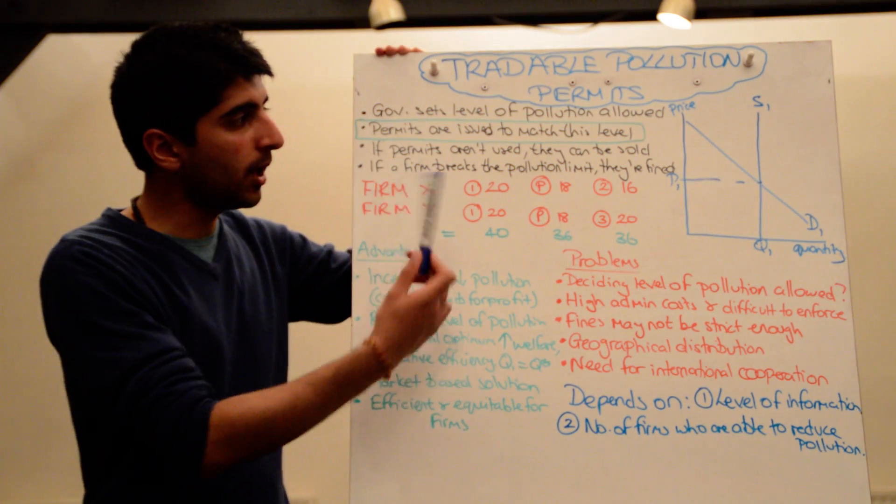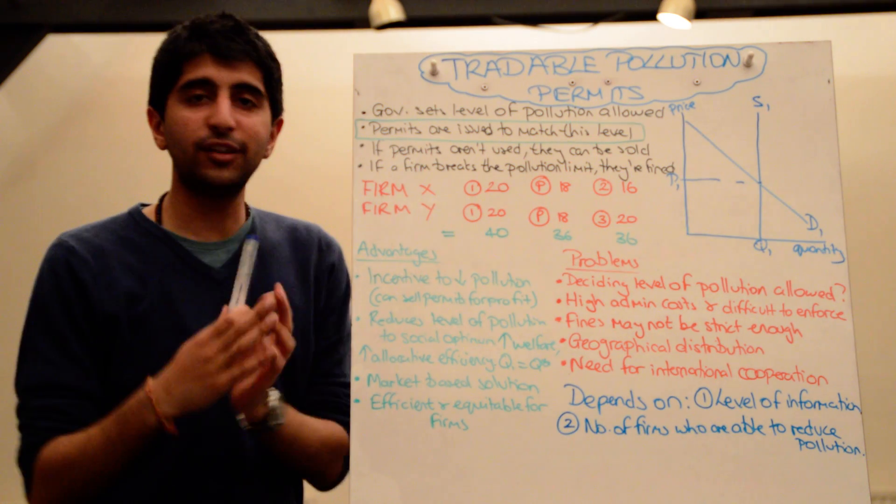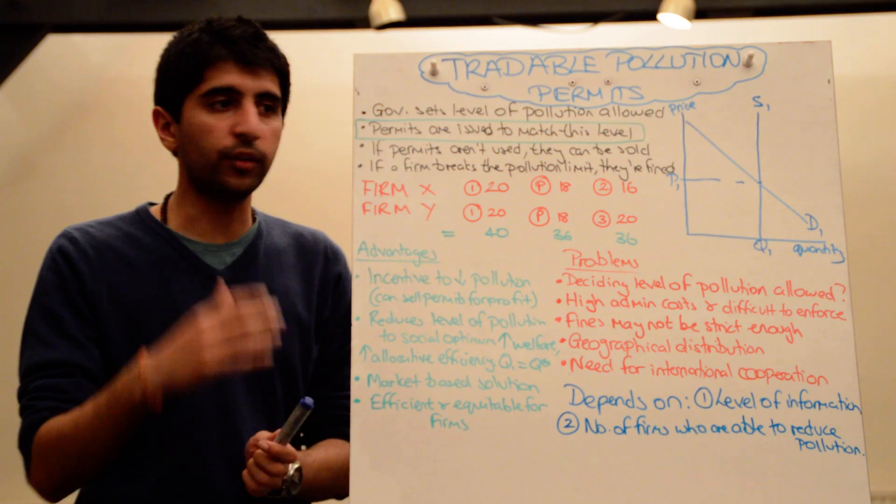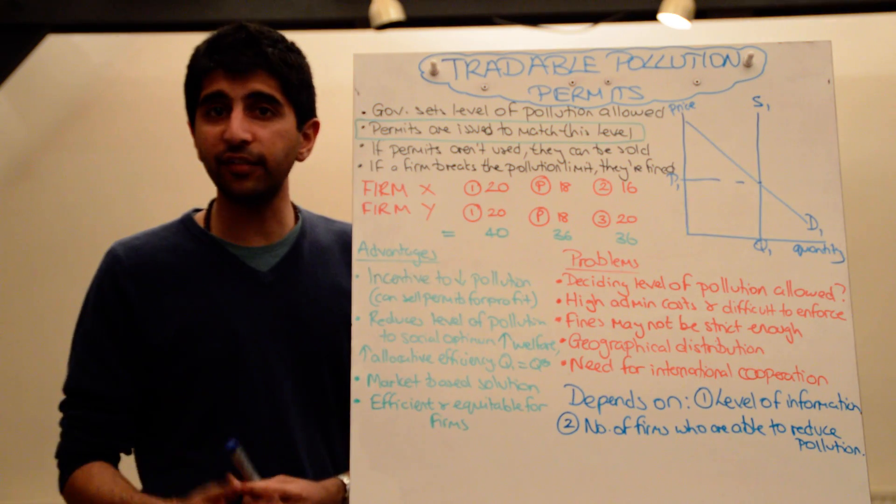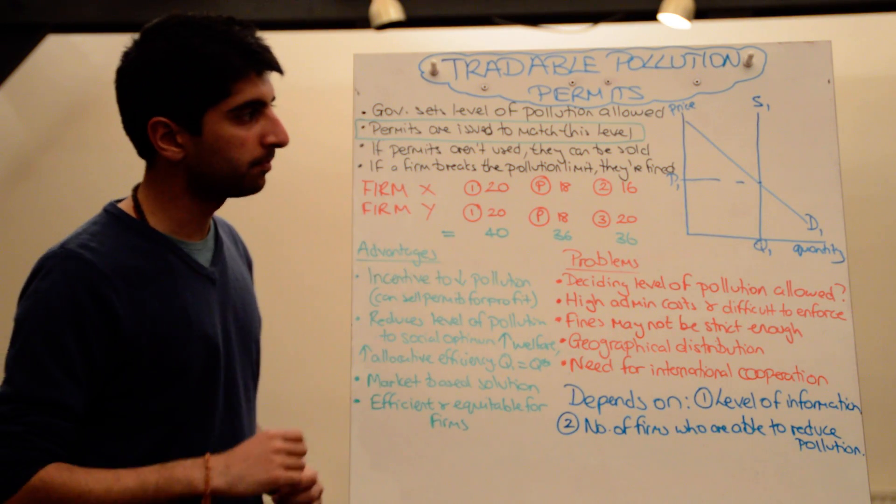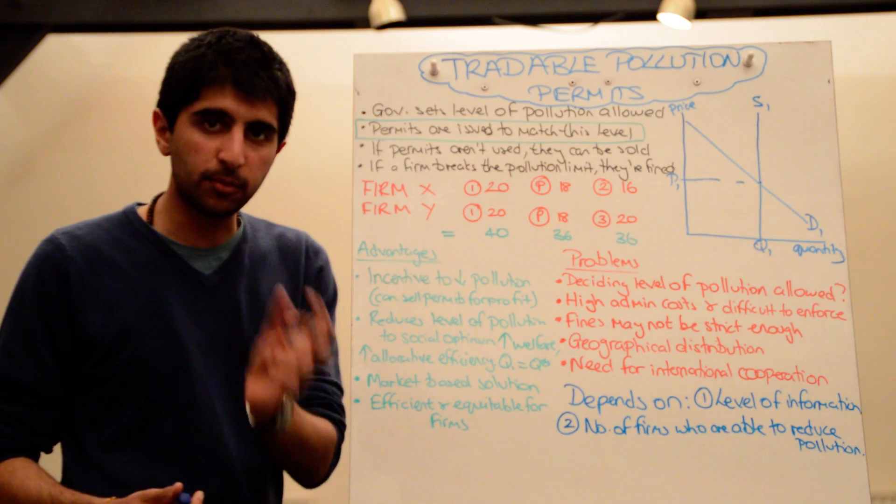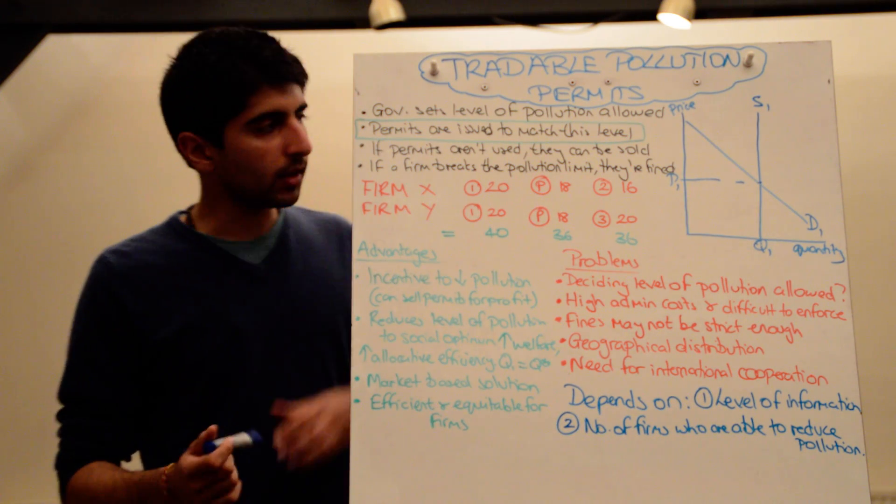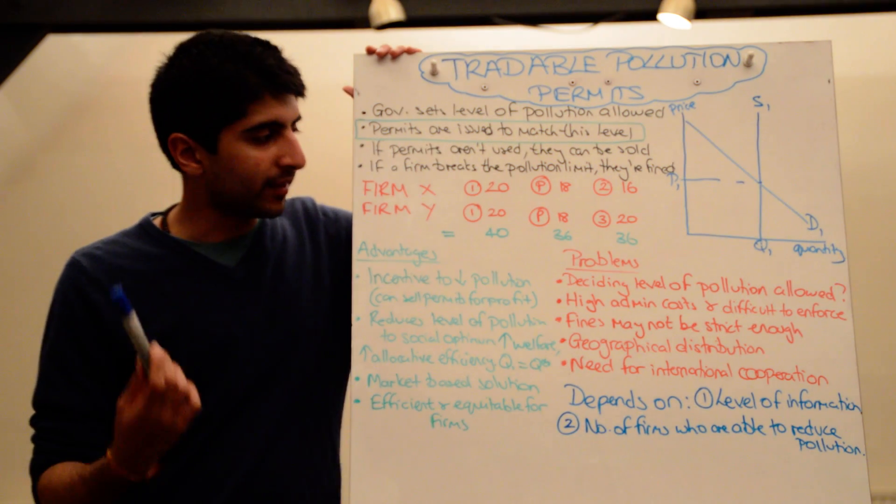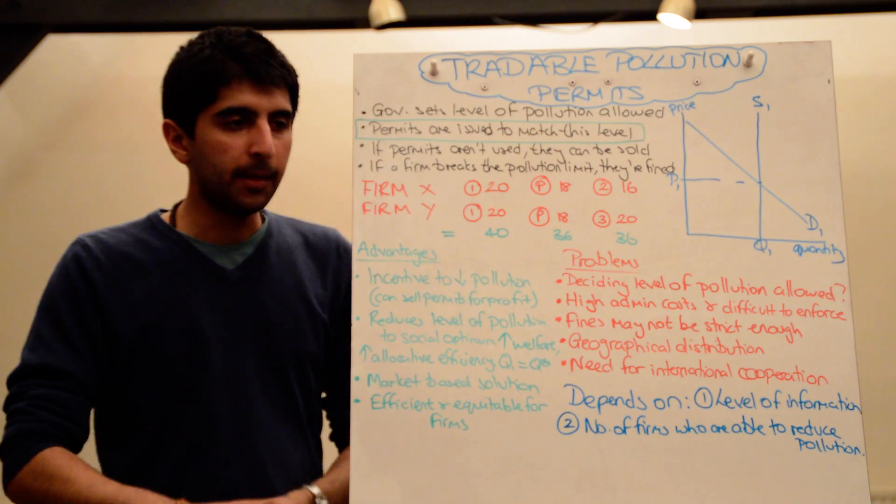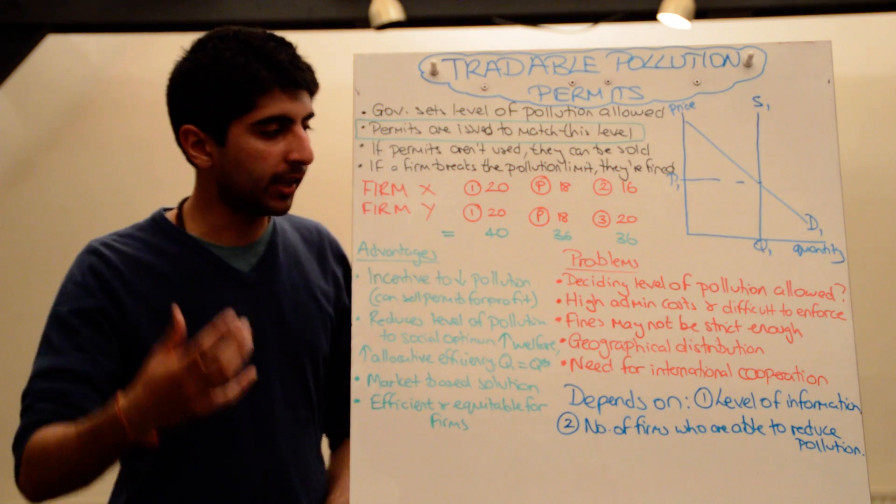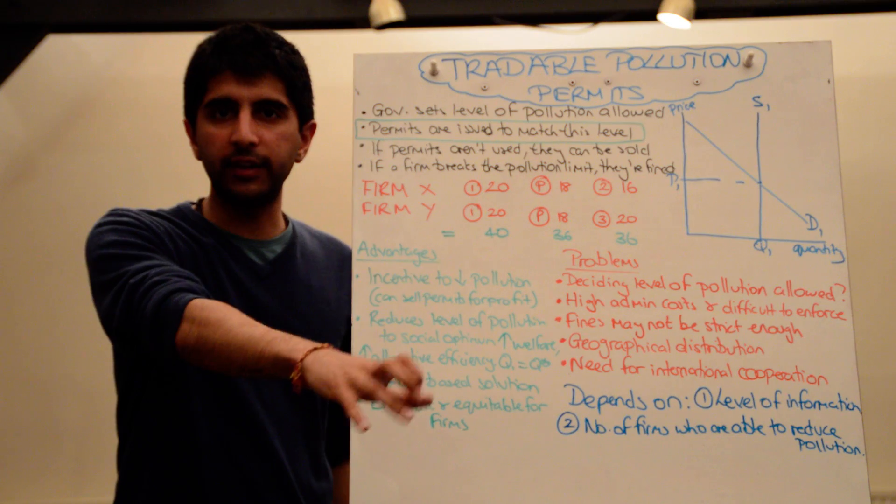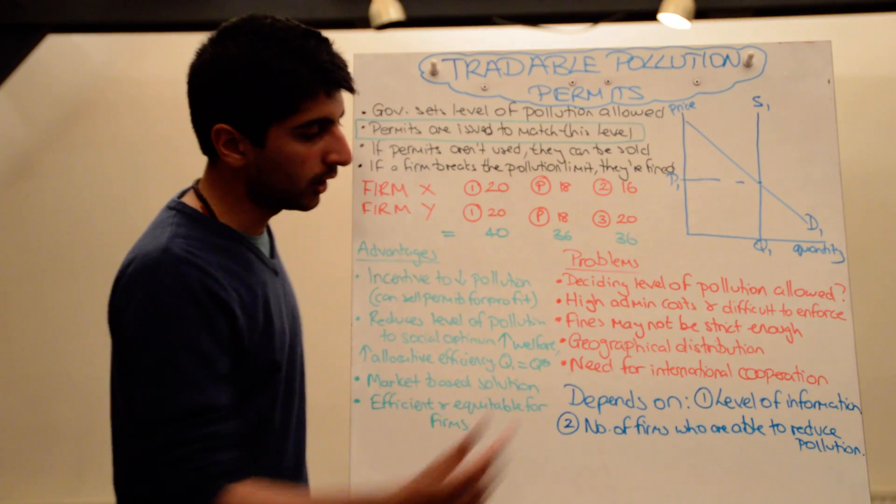The fines might not be strict enough, in which case firms might actually continue polluting at high levels and actually taking the fine. So if the fine is actually less than the cost of reducing pollution, or the cost of buying permits, then firms are just going to take the fine. So the fine needs to be strict enough. If not, it's not going to work. At the same time, you might, as a result of this, get a geographical distribution of pollution that's heavily concentrated in one area. The Kyoto Protocol, one of the main issues of that, which was the Tradable Pollution Permit scheme, was that actually pollution was concentrated heavily in the USA, because USA firms ended up just buying permits from developing countries who had a huge excess level. So in that sense, pollution was concentrated in the USA more than anywhere else. That's a major consequence and a major problem.